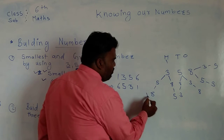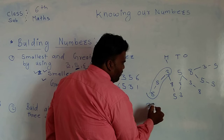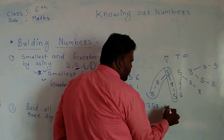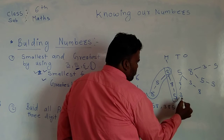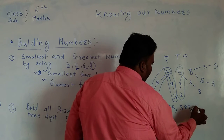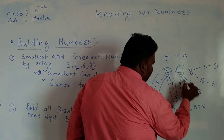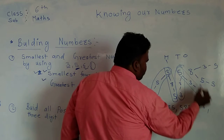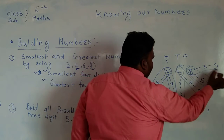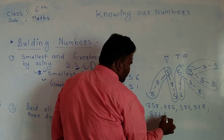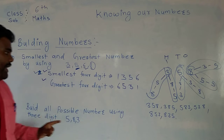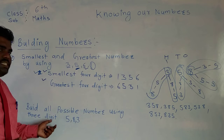So how many numbers appear here? Look: three-five-eight, three-eight-five, five-eight-three, five-three-eight, eight-five-three, eight-three-five. Counting them: one, two, three, four, five, six. So there are six possible numbers. This is how we can find all possible numbers by using some given digits.